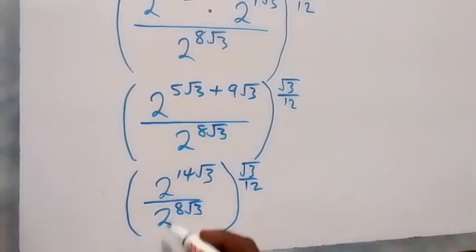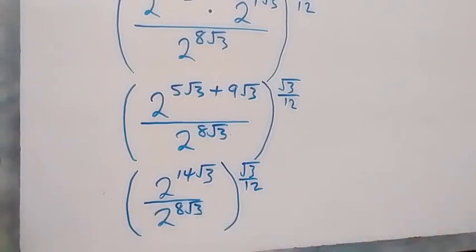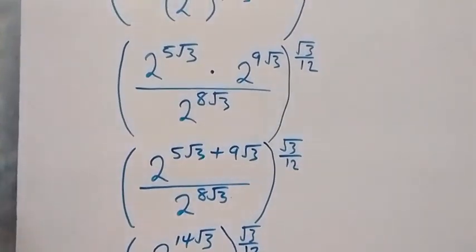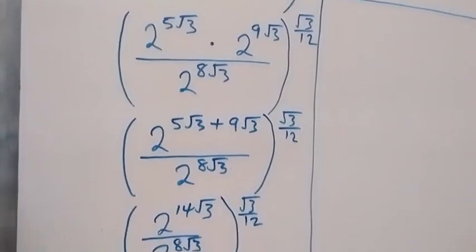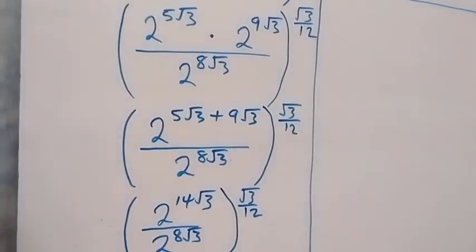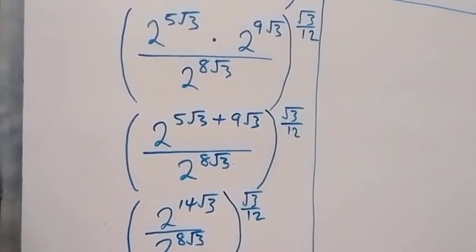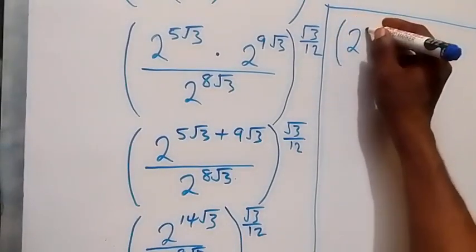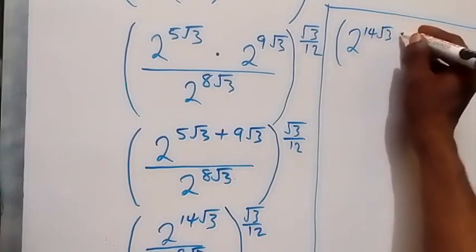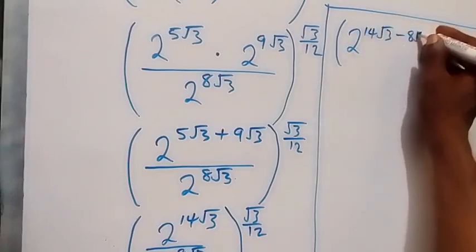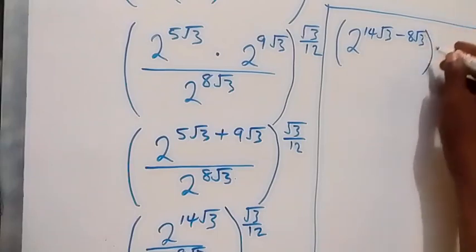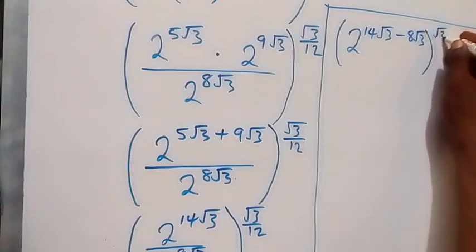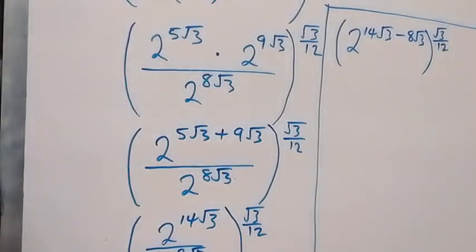From here, since we have the same base dividing, that means we can subtract the powers. This can be written as 2 raised to power (14 root 3 minus 8 root 3), which equals 2 raised to power 6 root 3, all raised to power root 3 over 12.